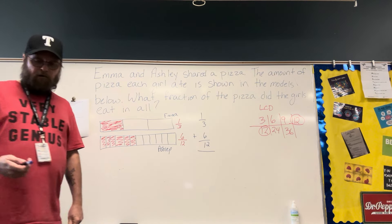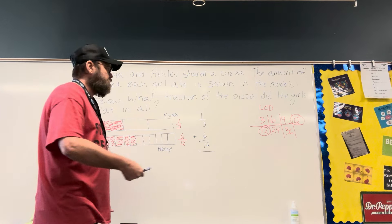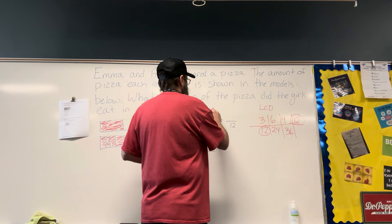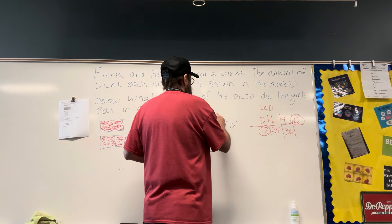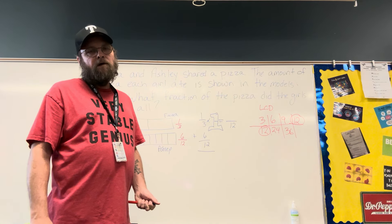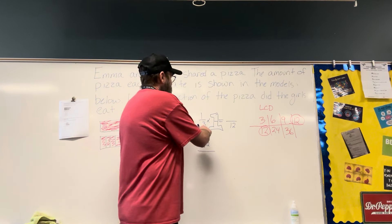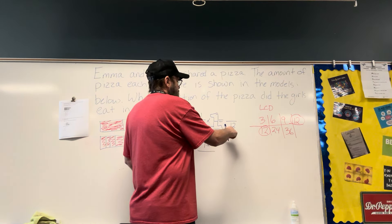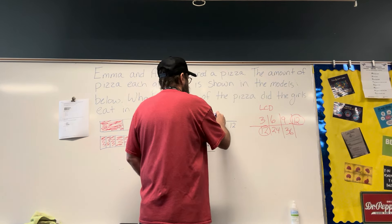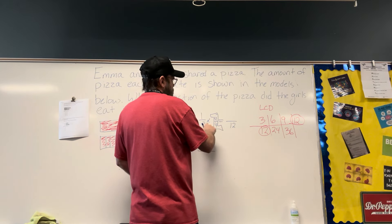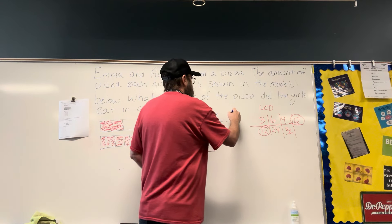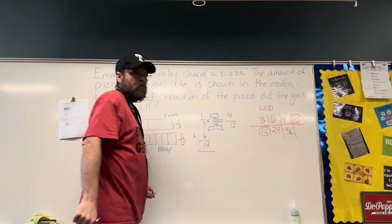So we need to make both of these fractions over 12 without changing their value. This needs to be over 12, which means I need to multiply it by a fraction that equals 1, because if I multiply something by 1 I do not change the value. 3 times 4 equals 12, so if I multiply the denominator by 4, I have to do the same thing to the numerator. 1 times 4 is 4.